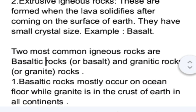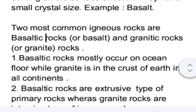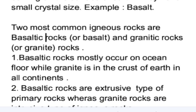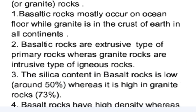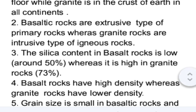The two most common igneous rocks are basaltic rocks, also called basalt, and granitic rocks, also known as granite. Basaltic rocks mostly occur on the ocean floor while granite is found in the crust of the earth across all continents. Basaltic rocks are extrusive type whereas granite rocks are intrusive type. The silica content of basalt is low, around 50 percent, whereas it is high in granite rocks, around 73 percent.